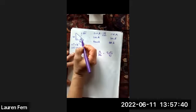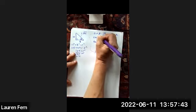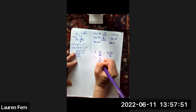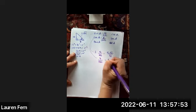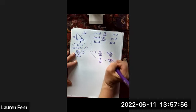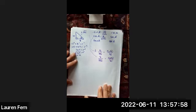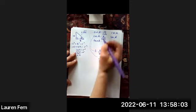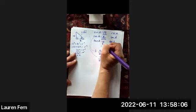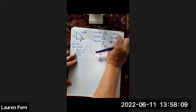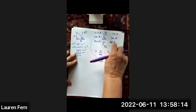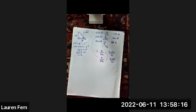The cosine of this angle is adjacent over hypotenuse, so it's 8 over 2 root 41, which simplifies to 4 over root 41, or 4 root 41 over 41. The tangent is y over x, 10 over 8, which is 5 over 4. To get the cosecant, we flip the sine; the secant, we flip the cosine; and the cotangent, we flip the tangent.